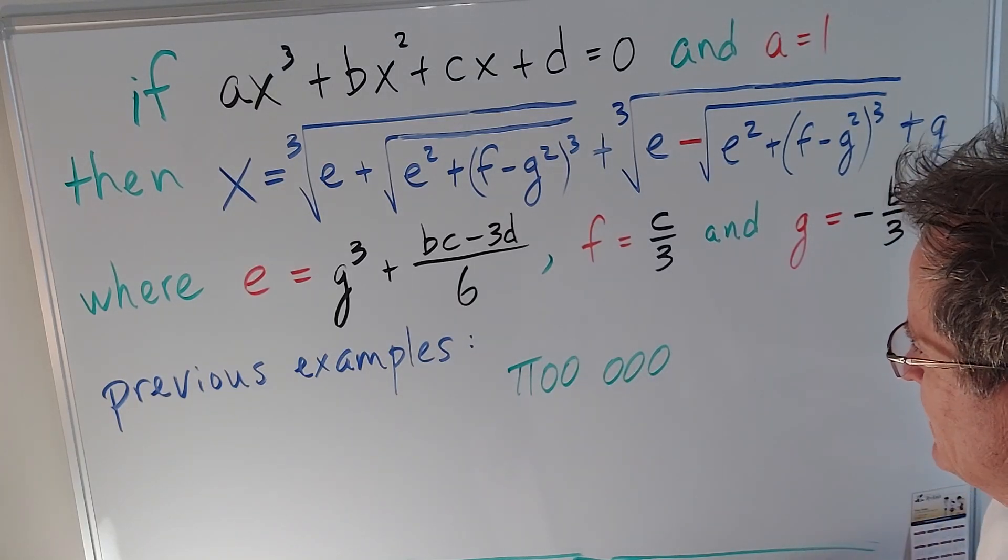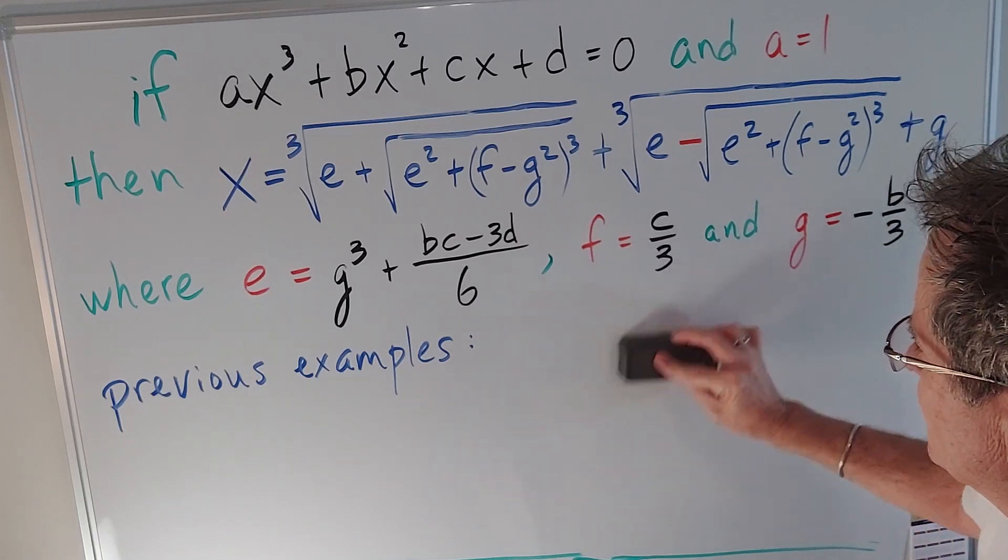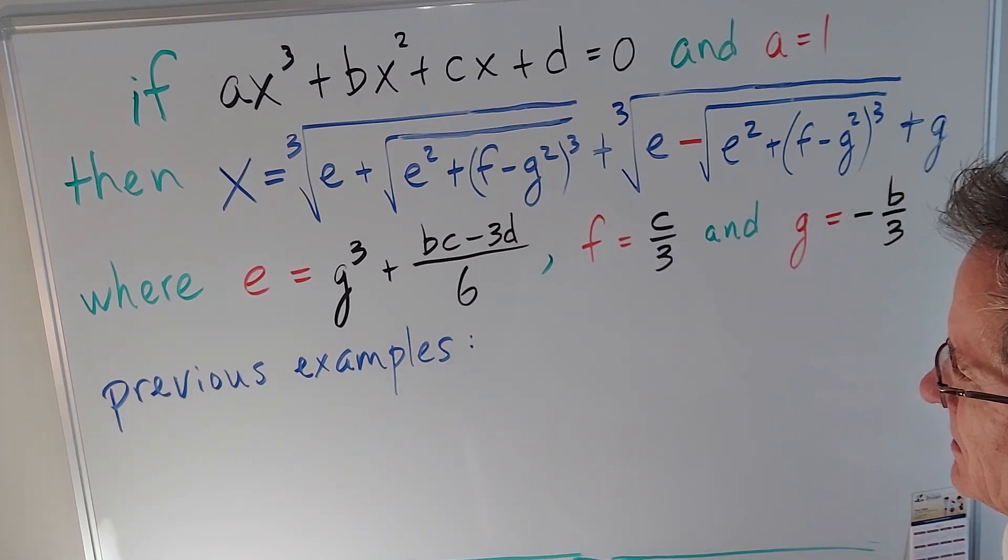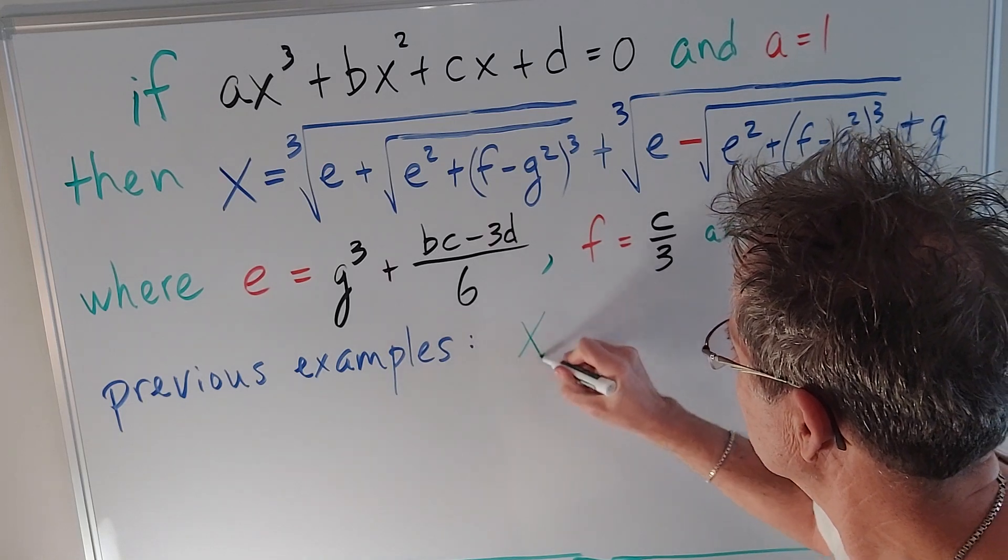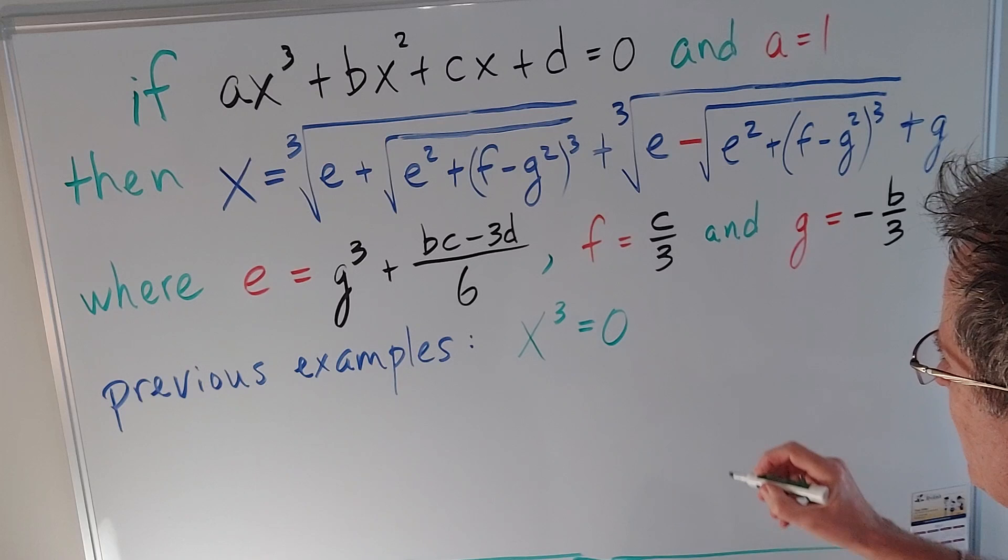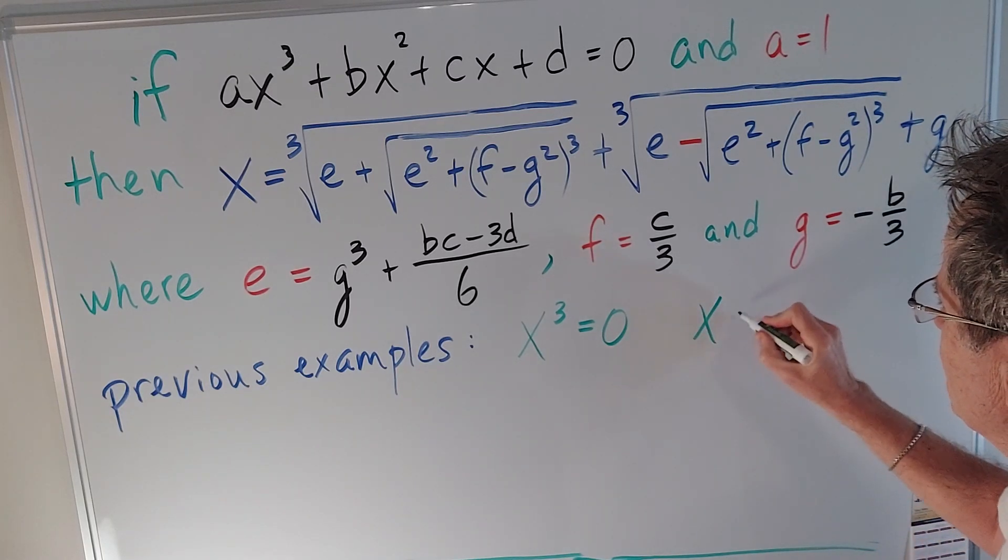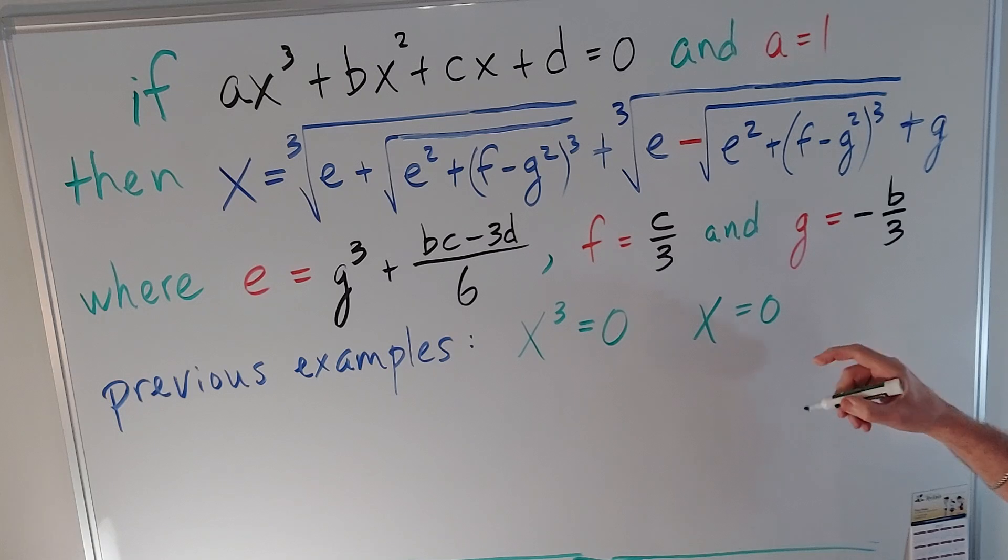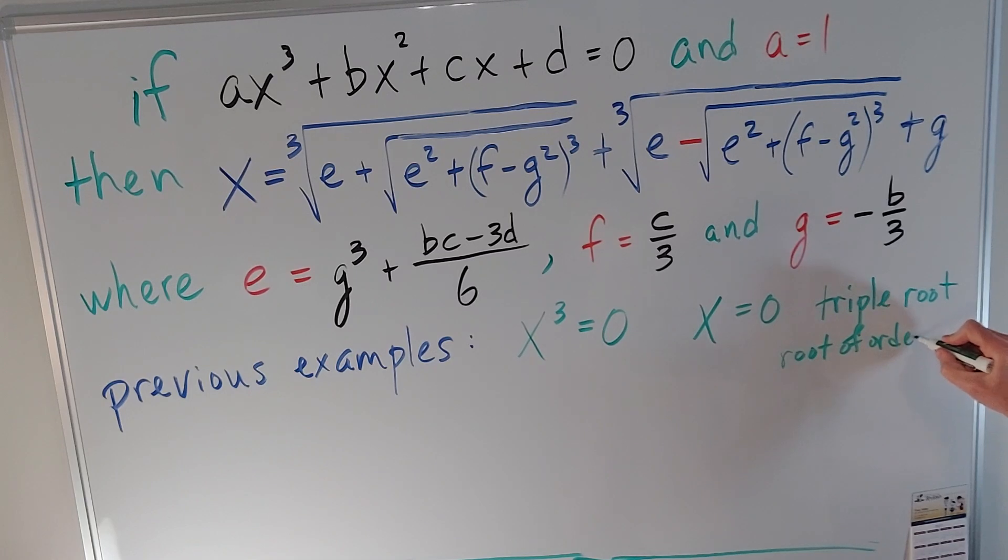Let's see how that applies to some of our previous examples just to tie things together. So let's start off with a really easy one x³ = 0. Well we know that x is zero. Aren't there supposed to be three roots for a cubic? Well we get around that by calling this a triple root.